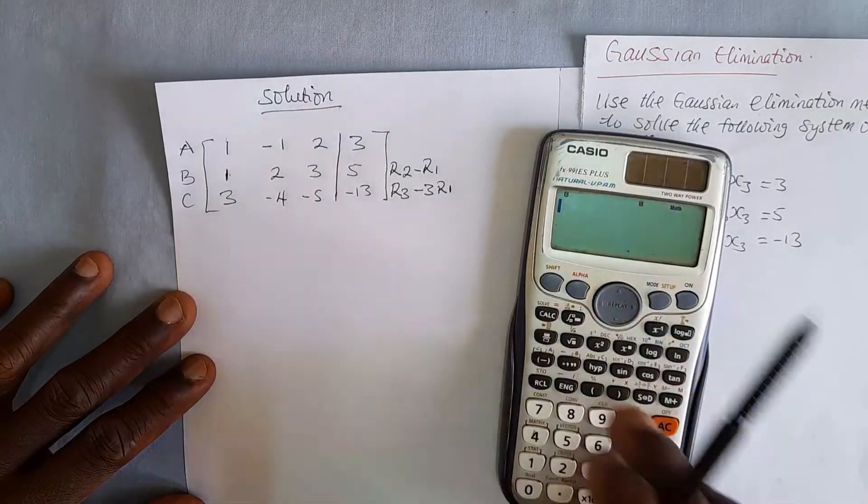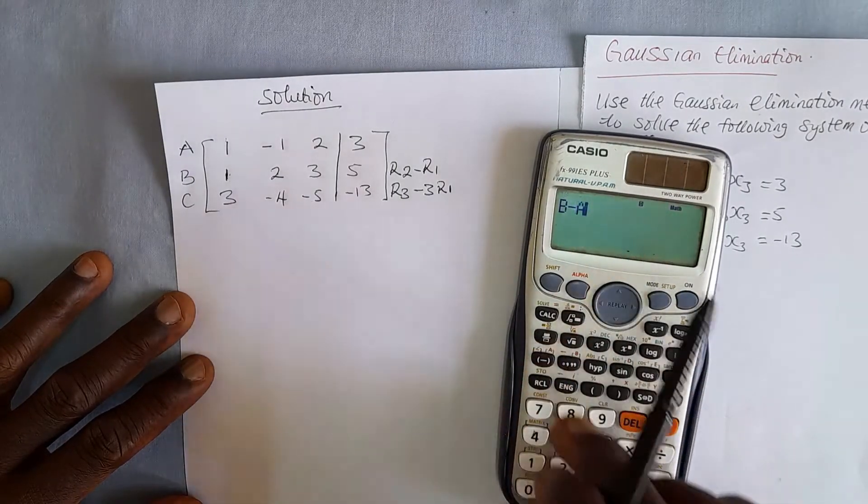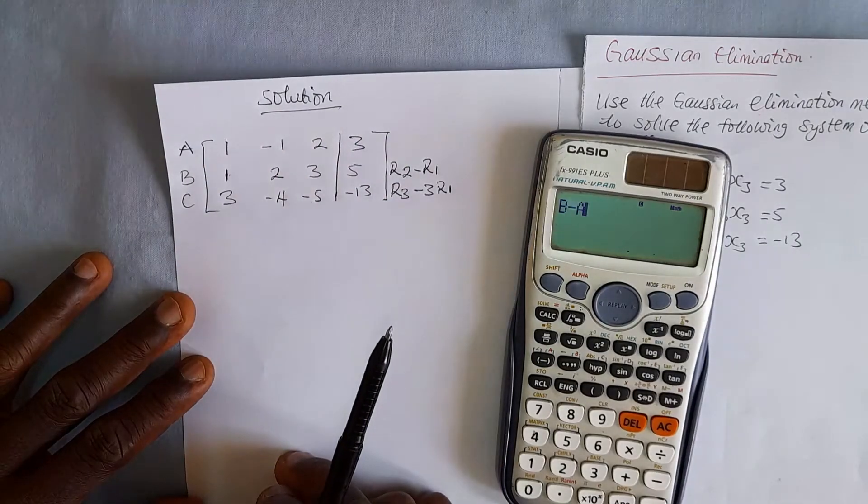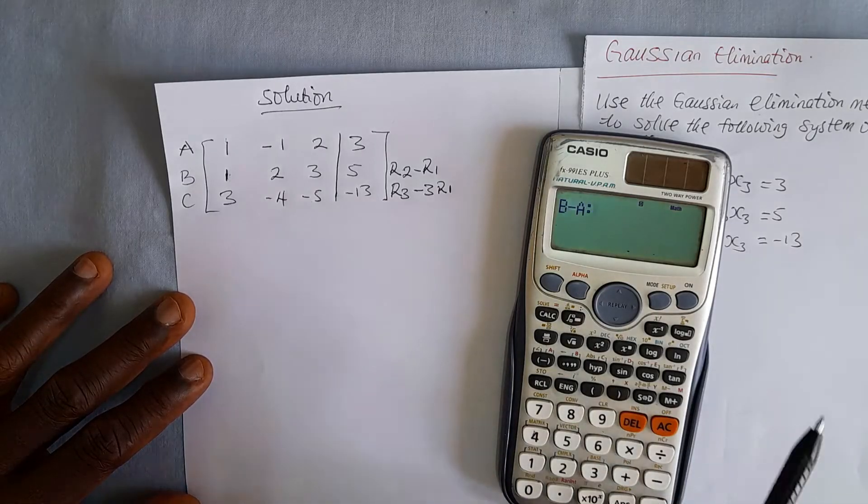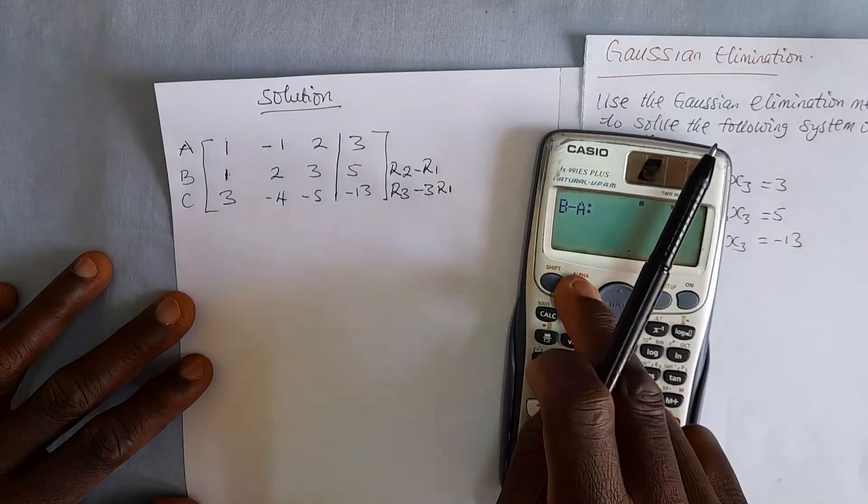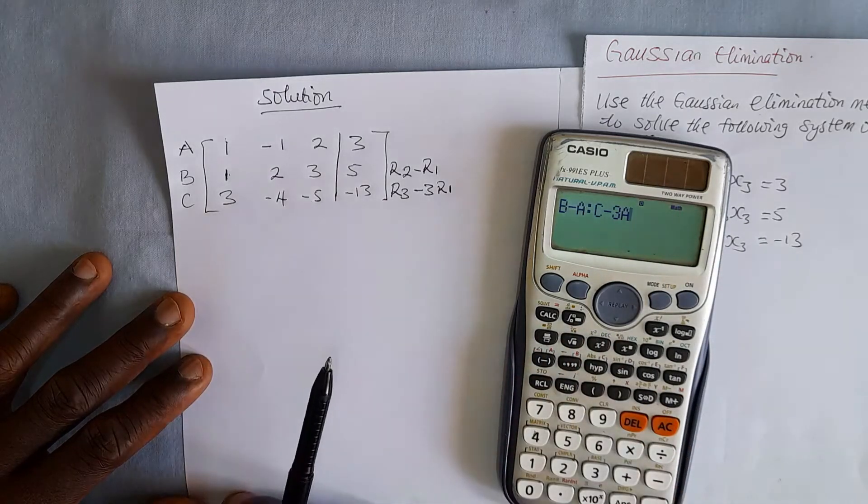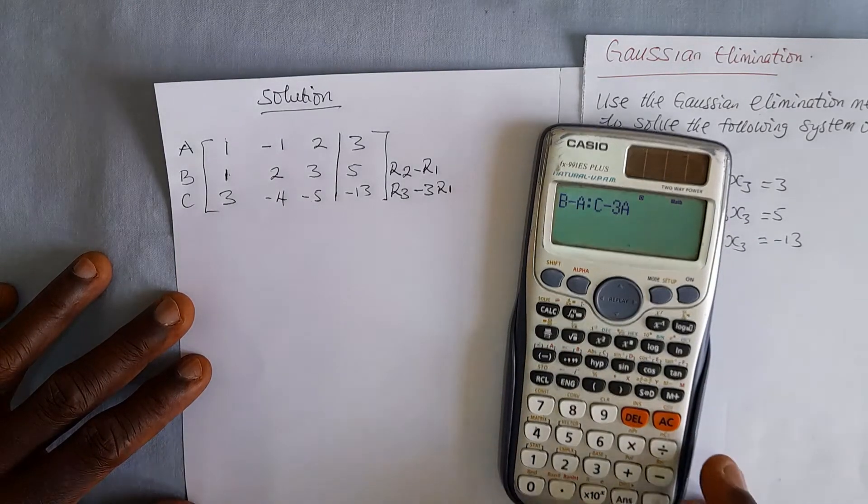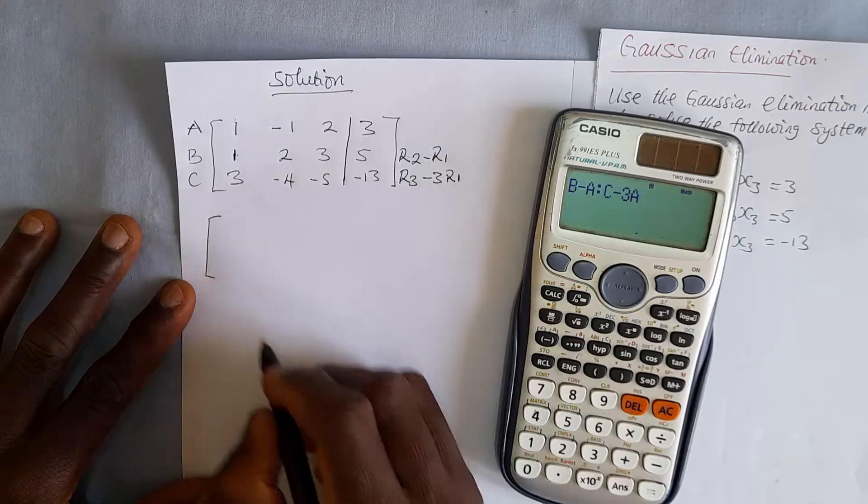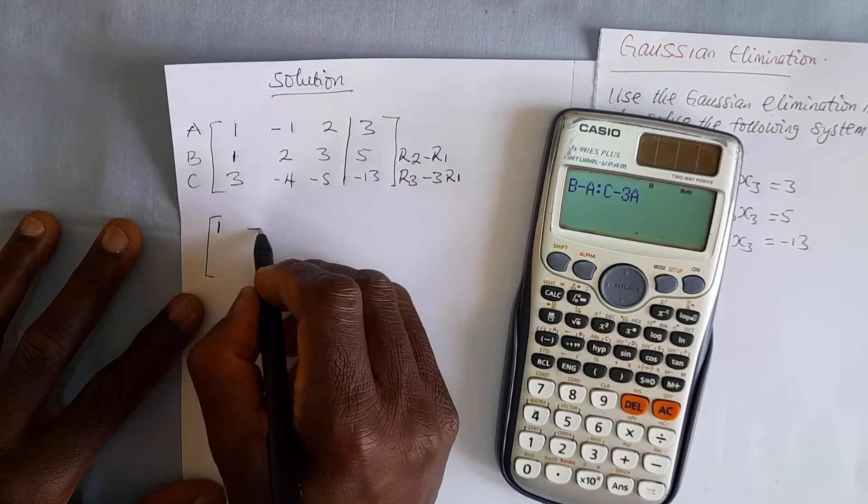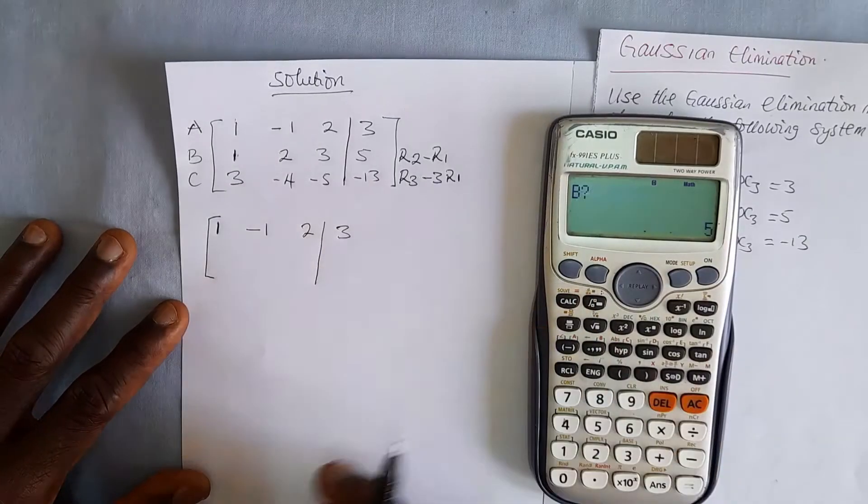For row 2, we use alpha. Our R2, we said it's B. So we put B minus A, that is our R1. We are done with that operation. So we separate it with a colon. We press alpha and this key to enter the next operation. And the next, we have R3, Rc minus 3 R1, which is A. Now we ask the calculator to calculate for us. But before then, let us rewrite the next matrix. And because there was no operation on row 1, we have to write it the same way it was. So calculate for us.